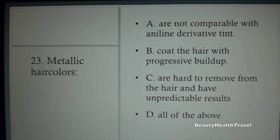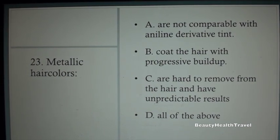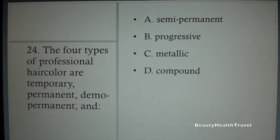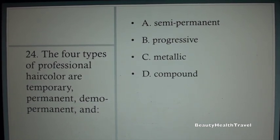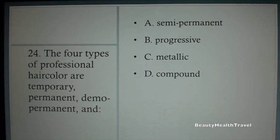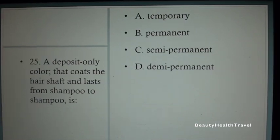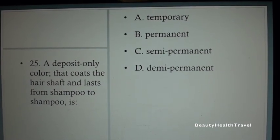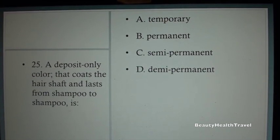Question 22: Non-professional colors that are also called gradual colors and include copper, lead, or silver are called: A. Vegetable dyes, B. Aniline derivative dyes, C. Metallic dyes, D. Aluminum dyes. Question 23: Metallic hair colors: A. Are non-compatible with aniline derivative tint, B. Coat the hair with progressive buildup, C. Are hard to remove from hair and have unpredictable results, D. All of the above.